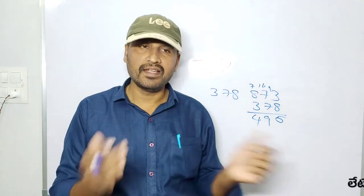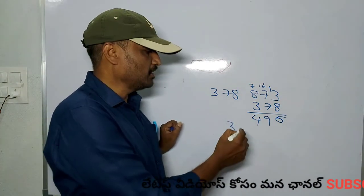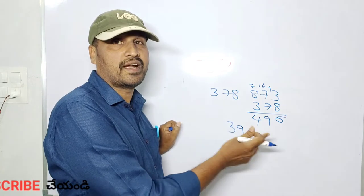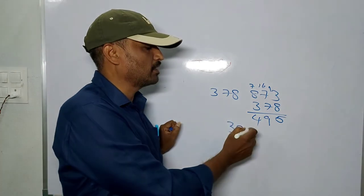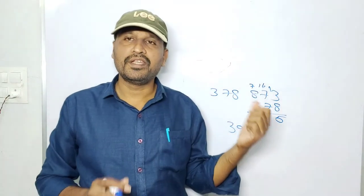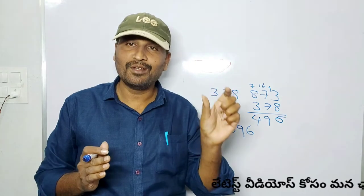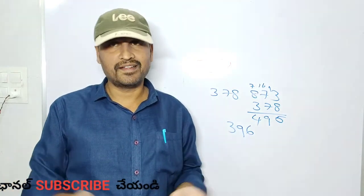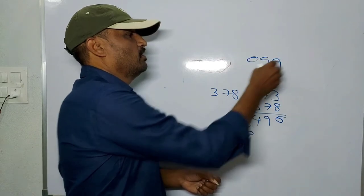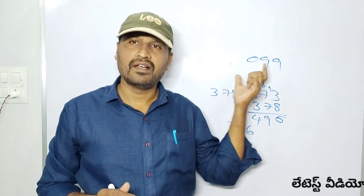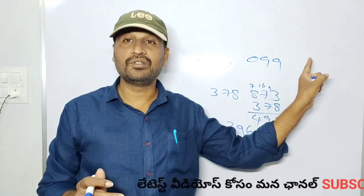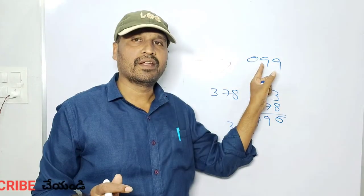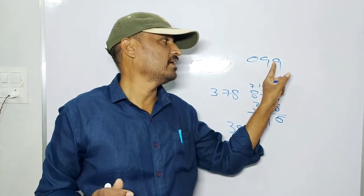If you take a 4-digit number, just look at the middle digits — they will be 9. For a 3-digit result like 099, if the first digit is 0, the answer is 099. The first digit and last digit will always sum to 9, and the middle digit is always 9.